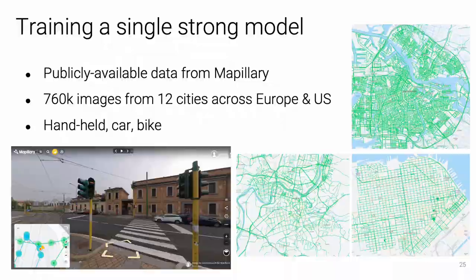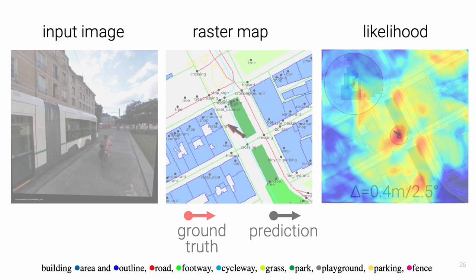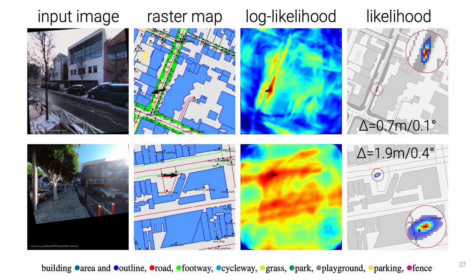Let's now look at some examples. We show the input image and the map, where buildings are shown in blue, roads in red, and so on. We draw the ground truth pose in red and the max likelihood pose in black, which are within 40 cm and 3 degrees. The likelihood is very sharp but can also encode uncertainties with multiple modes due to symmetries. Predictions are more accurate in areas that exhibit distinctive and well-localized features, like trees and building boundaries in the top example. Predictions have a higher uncertainty otherwise, here in the bottom one.